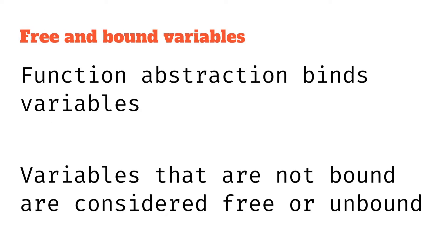So what are free and bound variables? We're going to define that with two rules. Our first rule is: function abstraction binds variables. And our second rule is: variables that are not bound are considered to be free, or unbound. These rules seem simple, almost too simple, so I think some examples would really help us out here.